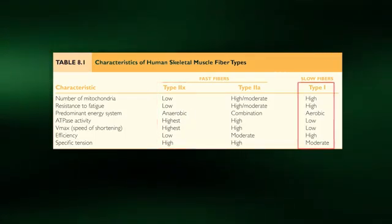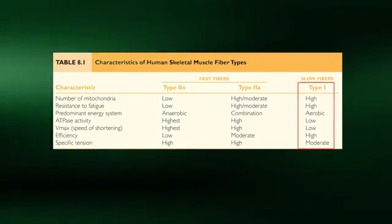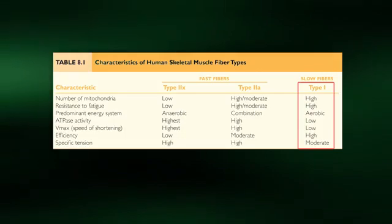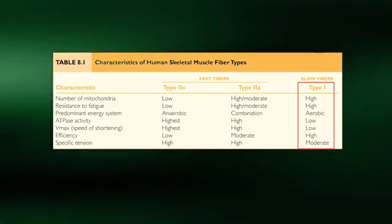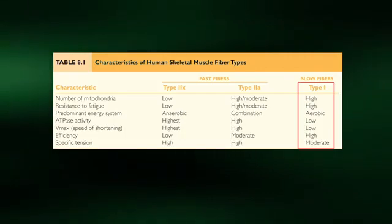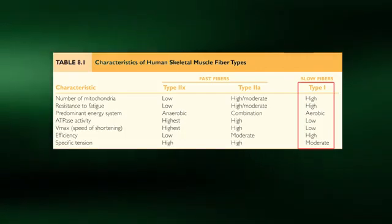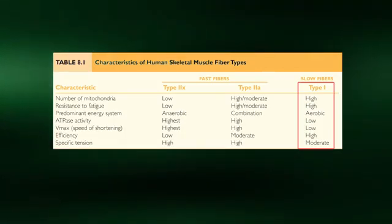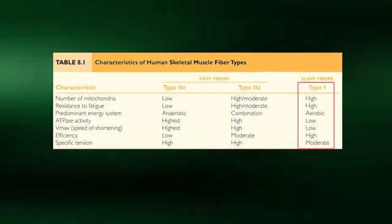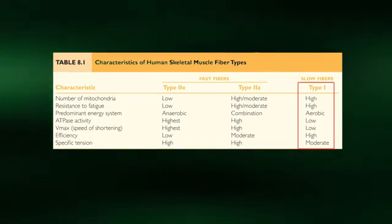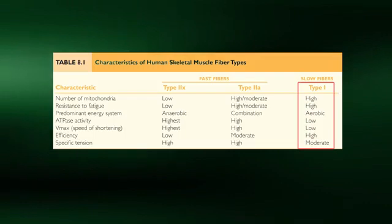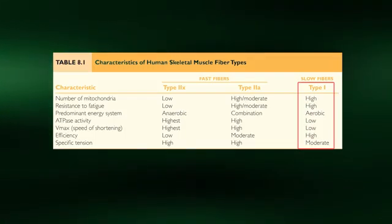On the other extreme, type 1 fibers can only generate moderate force at a much slower rate. These fibers are primarily recruited when we are engaging in submaximal exercise for an extended period of time, such as distance running, swimming, and cycling. These fibers are high in mitochondria and, as such, use the aerobic pathway for ATP production. Also, as long as there is ample fuel, type 1 fibers are slow to fatigue.